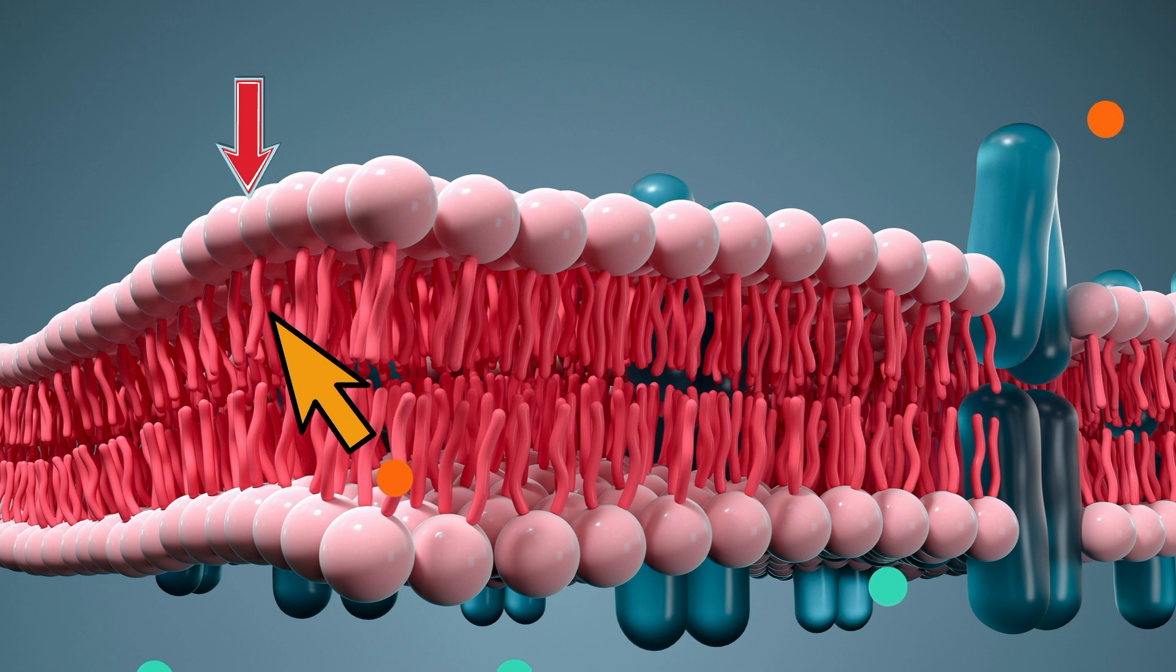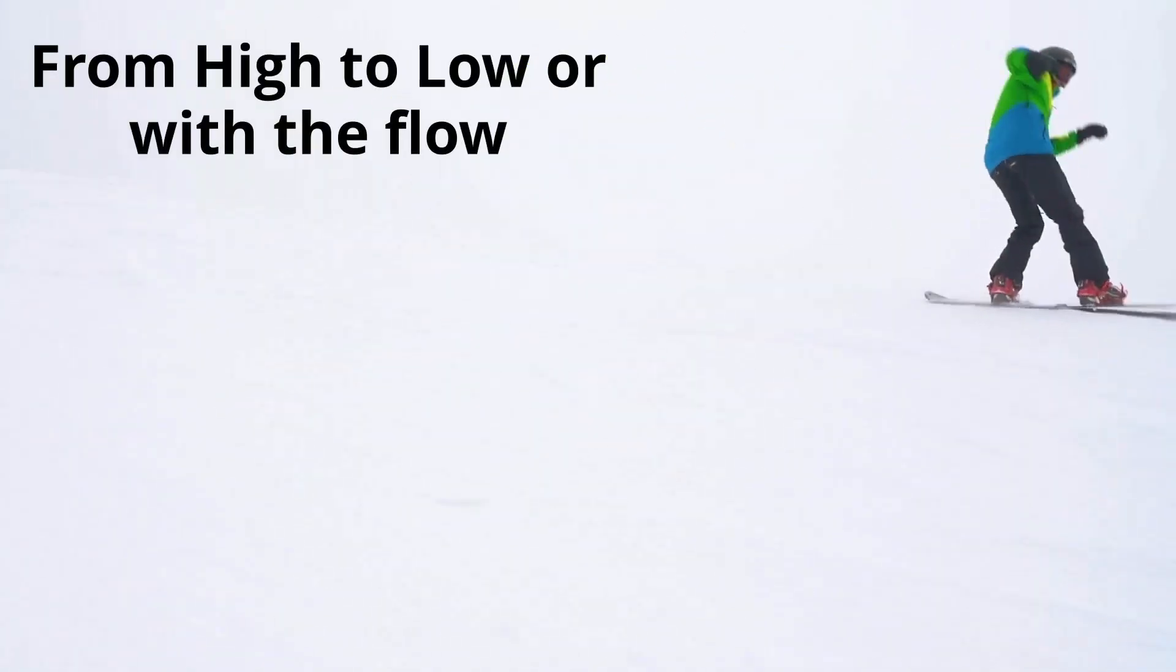Particles moving with diffusion move with the concentration gradient, or in other words, from high to low. This type of movement does not require energy from the cell.